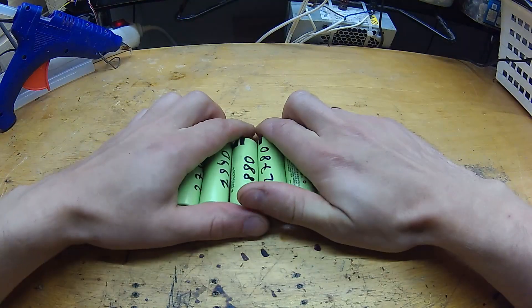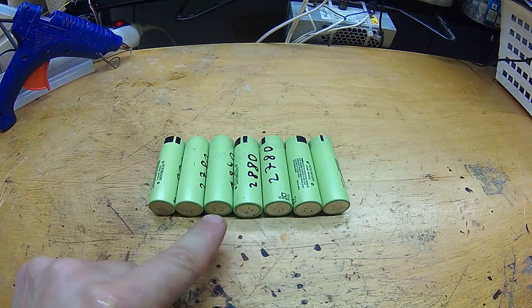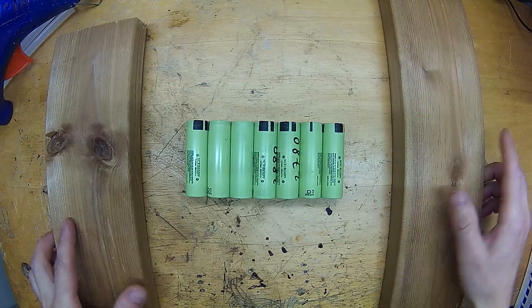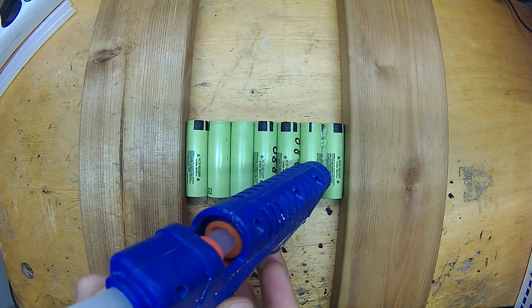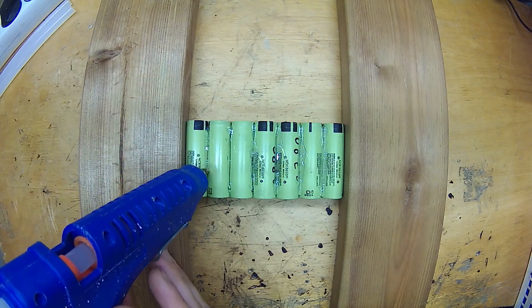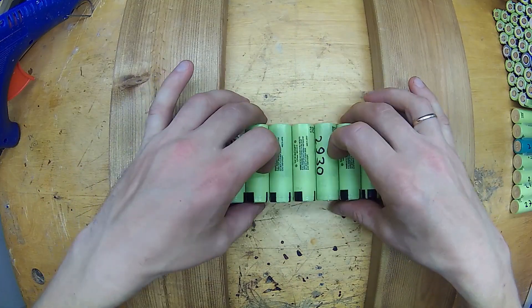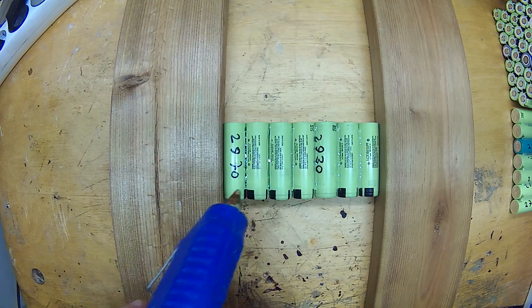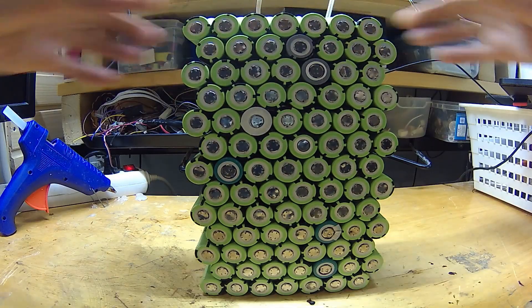So now we need to assemble our pack. Take the first series and arrange all the cells facing in the same direction. Take something heavy to press them together. I think the best way to assemble cells into a pack is hot glue. If you want, you can use some casings or some other mechanical way of keeping cells together. I will show you how to assemble a great pack using just hot glue. Apply hot glue between cells. Carefully flip the series around and do the other side. When all is done, you will have a pile of series.